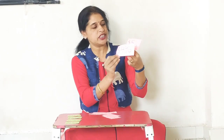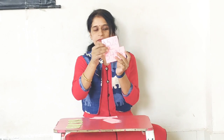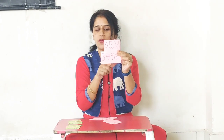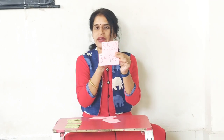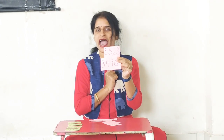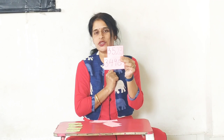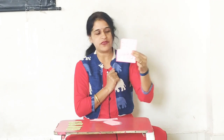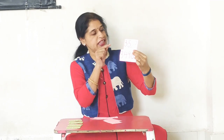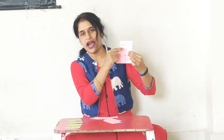Now see the hundreds place for those two numbers. In the thousands place both have 3 and 3, which are the same. Now see the hundreds place — one has 4 and one has 5. 4 is smaller than 5, so 3496 will come first and then will come 3523.